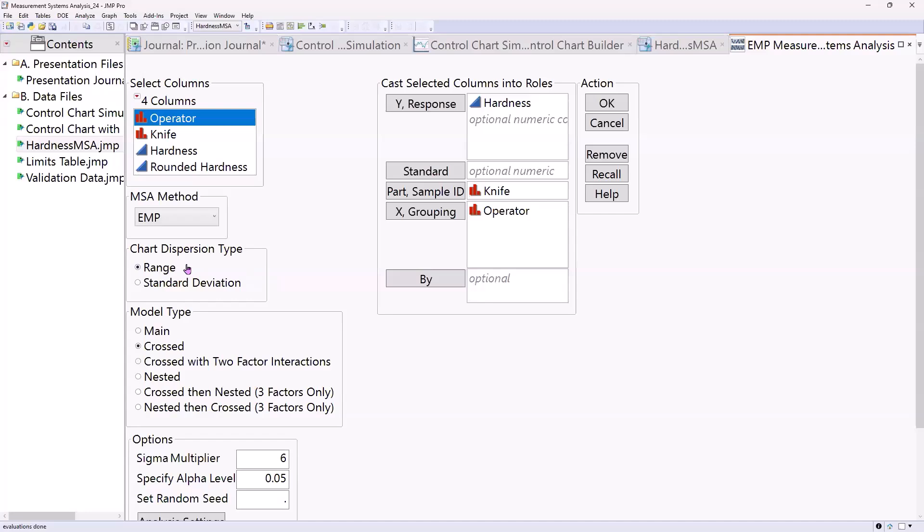Range and standard deviation. Range is default. Standard deviation. Wheeler has some recommendations on this. Range, if your measurement system is a little more coarse, kind of like my tape measure, range method is a really good thing to do.